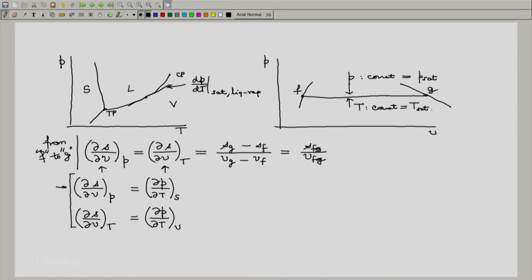Now between f and g in the saturation domain or on the saturation line, both these partial derivatives are equal. And hence both the right hand sides should also be equal. And that obviously means something which we already know that both these are equal and are equal to dp by dt along the saturation line for the liquid vapor combination of states.